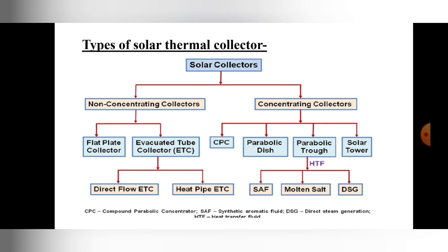In today's lecture we covered: the topics to be learned in Unit 2, what a solar collector is, the applications of solar collectors, where solar collectors are located in a solar water heating system, and the different types — concentrating and non-concentrating. In the next video we will see non-concentrating collectors — flat plate and evacuated tube — and then concentrating collectors: CPC, parabolic dish, parabolic trough, and solar tower. We will stop here for today's lecture.